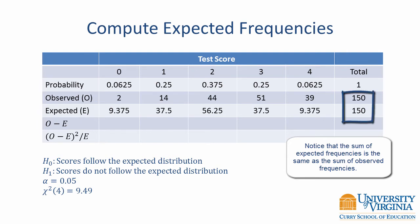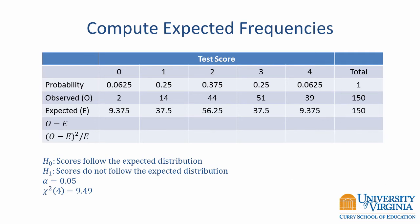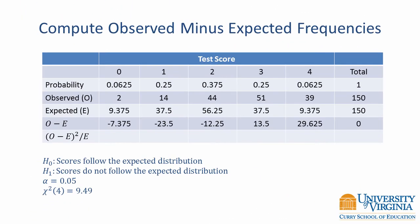Next we need to take the difference between the observed and expected frequencies. For example, at a test score of 0, we take the difference between 2 and 9.375 to get negative 7.375. Next, we take 14 minus 37.5 to get negative 23.5. We can continue with this calculation for the remaining score levels.